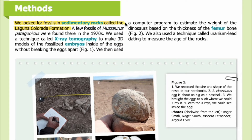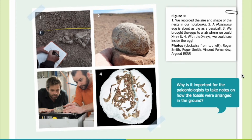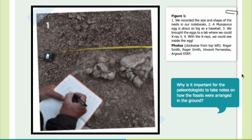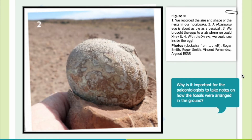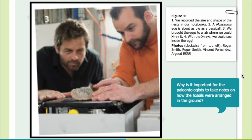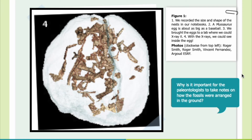Methods: We looked for fossils in sedimentary rocks called the Laguna Colorada Formation. A few fossils of Mussaurus patagonicus were found there in the 1970s. We used a technique called X-ray tomography to make 3D models of fossilized embryos inside eggs without breaking them apart. In Figure 1, photo one shows that we recorded the size and shape of nests in our notebooks. Photo two shows that a Mussaurus egg is about as big as a baseball. Photo three shows how we brought eggs to a lab to be X-rayed, and photo four shows the bones we could see inside the egg using those X-rays.